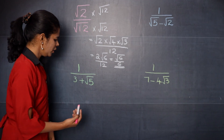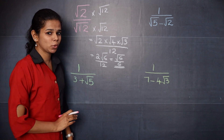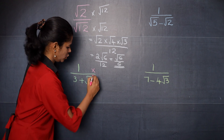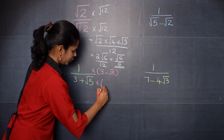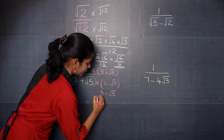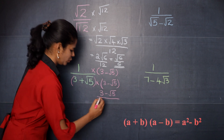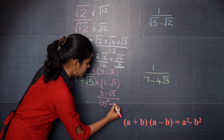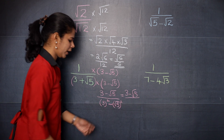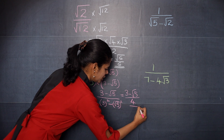Moving on to the next question. You have the denominator as 3 plus root 5. Since you have two terms you need to apply the conjugate. The conjugate of 3 plus root 5 is 3 minus root 5. So you need to multiply both numerator and denominator by its conjugate. Now 1 into 3 minus root 5 is 3 minus root 5 divided by — you can apply the identity A plus B into A minus B equals A square minus B square. So that is 3 square minus root 5 the whole square, which gives 9 minus 5 equals 4. So the answer is 3 minus root 5 over 4.